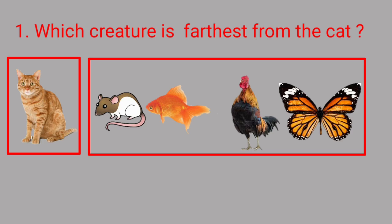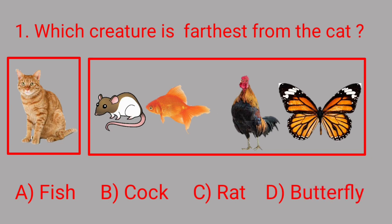Our first question is, which creature is farthest from the cat? Option A is fish, option B is cock, option C is rat, and option D is butterfly.